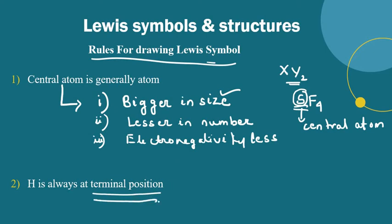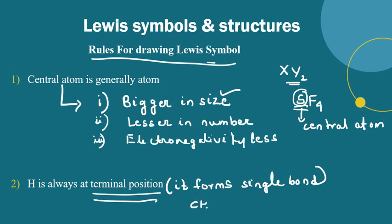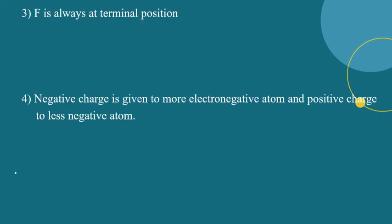Hydrogen appears at the terminal or corner position because hydrogen forms only single bonds — it shares one electron. For example, in CH4, carbon is the central atom and the four hydrogen atoms are placed at terminal positions, each forming a single bond.